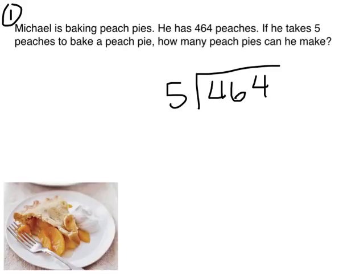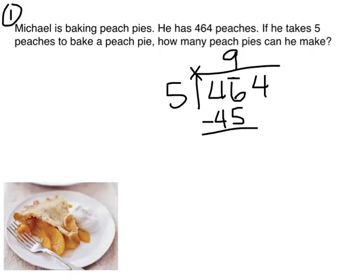First, let's do our division. Where should I start dividing? With four hundreds, forty-six tens, or four hundred sixty-four ones? I'm going to start in the tens place. How many times does five go into forty-six? Five goes into forty-six nine times. After I divide, I multiply. What's nine times five? Nine times five is forty-five. When I subtract, I have one ten left over.